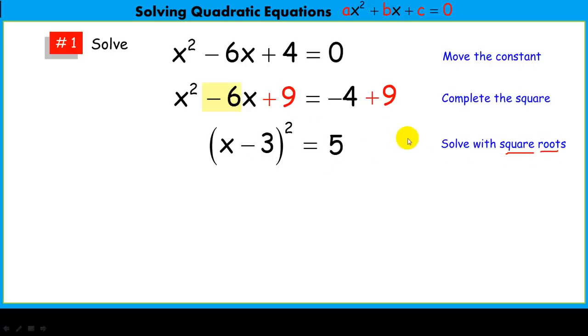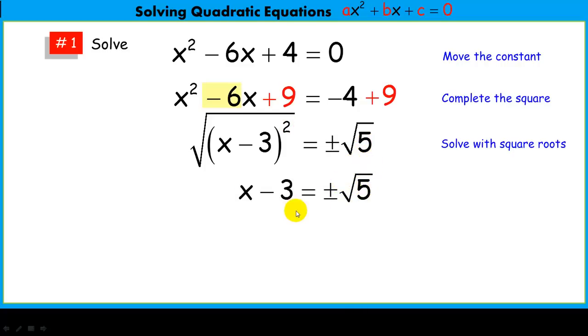In other words, we'll take the square root of both sides. Taking the square root of x minus 3 squared, this is basically an inverse operation that gets rid of this, leaving just x minus 3 behind. Taking the square root of 5, well, we have to consider both the positive and negative roots. And the square root of 5 is an irrational number, so we're just going to leave it plus or minus square root of 5.